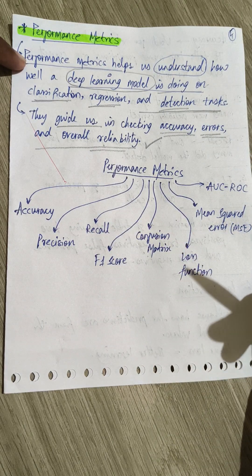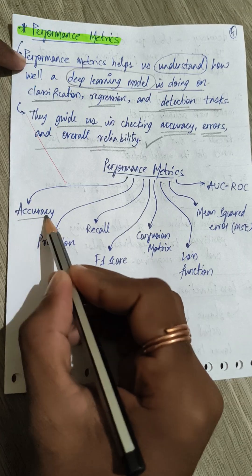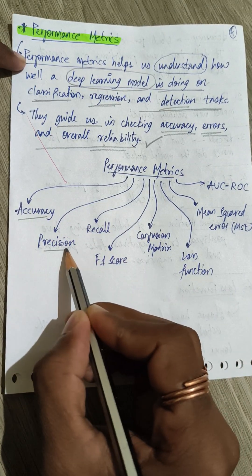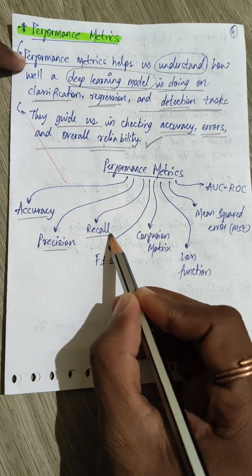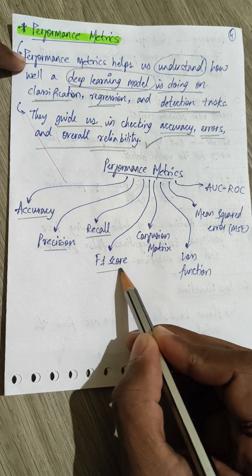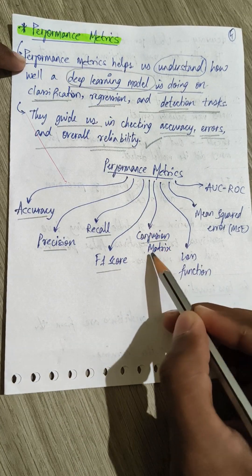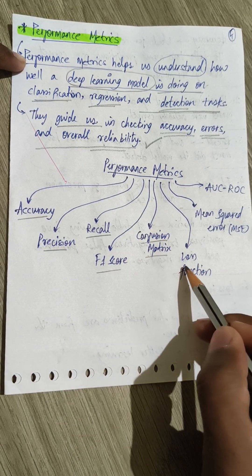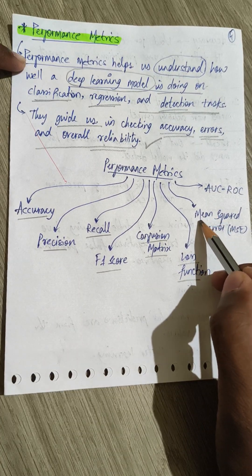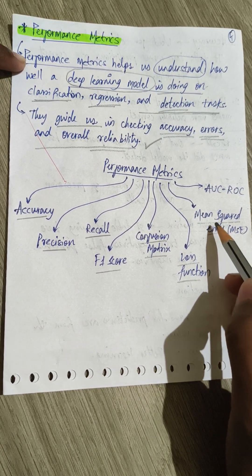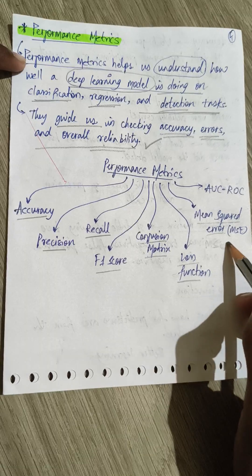The first one is accuracy, the second one is precision, the third one is recall, the fourth one is F1 score, fifth one is confusion matrix, sixth one is loss function, seventh one is mean squared error, also called MSE.